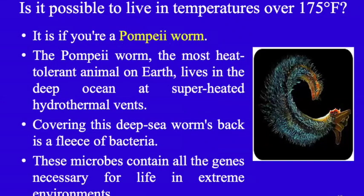For extra knowledge: is it possible to live in temperatures over 175 degrees Fahrenheit — nearly 89 to 90 degrees Celsius? Yes, if you are a Pompeii worm. The Pompeii worm, the most heat-tolerant animal on Earth, lives in the deep ocean at superheated hydrothermal vents — hydro means water, thermal means heat — where large amounts of heated water come out from vents on the ocean floor. Covering this deep-sea worm's back is a fleece of bacteria containing all the genes necessary for life in extreme environments.